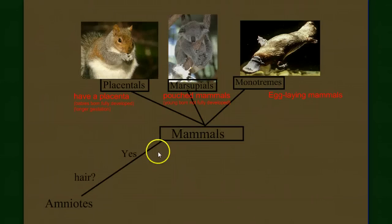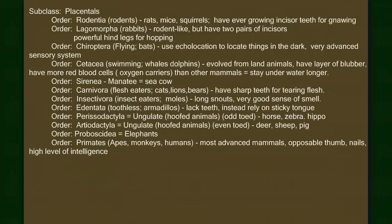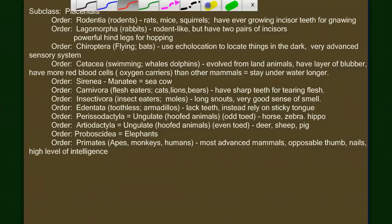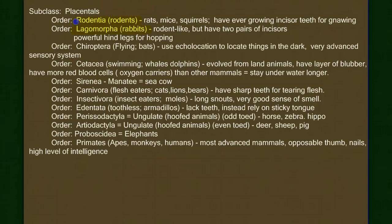Within the subclass placentals, there are many different orders. We have the rodents and lagomorphs (which include rabbits), the chiroptera (the flying mammals — bats), order Cetacea (the swimming mammals — dolphins and whales). Interestingly, mammals are terrestrial animals, and the evolution of dolphins and whales represents a movement back to water — they are air-breathing mammals with lungs.